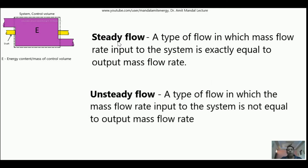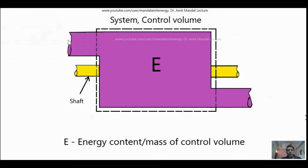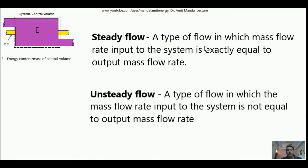Now, what is steady flow? Steady flow is the type of flow in which the mass flow rate input to the system is exactly equal to the output mass flow rate. For example, if mass is going inside at 4 kg per second, it will come out at the same rate. That is called steady flow. If it is not equal, that type of flow is called unsteady flow. Since we are deriving the steady flow energy equation, we will take the case of steady flow.